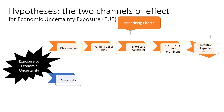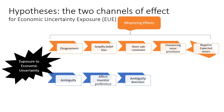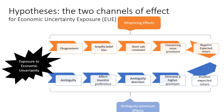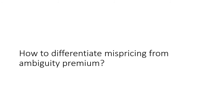The second channel is that economic uncertainty exposure leads to ambiguity about the future, which affects investors' preferences. Investors who dislike ambiguity or uncertainty will demand a higher return. Therefore, they will sell off the asset and lower the price at the moment, which induces a positive expected return in the future. We call this the ambiguity premium effect. Note that these two effects are opposite to each other. The challenge is to differentiate the mispricing from the ambiguity premium effect, and this is what we do.